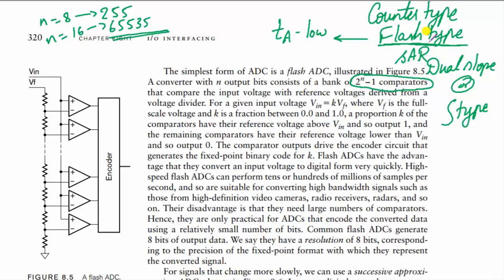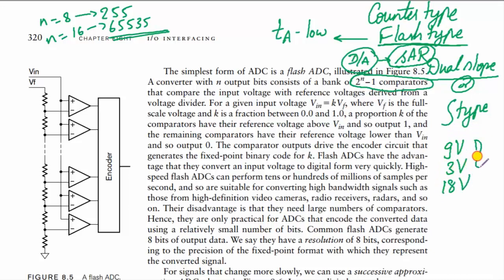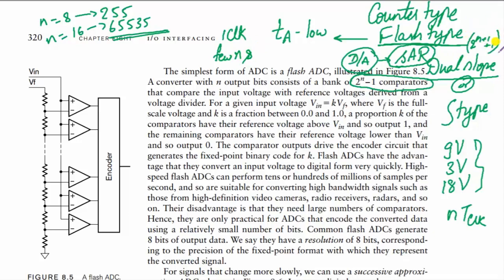Most of the time, flash type is not used. Dual slope A/D offers good precision and accuracy, and can reject noise effects. Successive approximation register (SAR) type is better in terms of speed and has less circuit complexity. For SAR type, whatever the input value, the conversion time is fixed at N × T_clock. Flash type converts in 1 clock cycle (a few nanoseconds), while dual slope takes 2^(N+1) + 1 times T_clock, which is a large value.